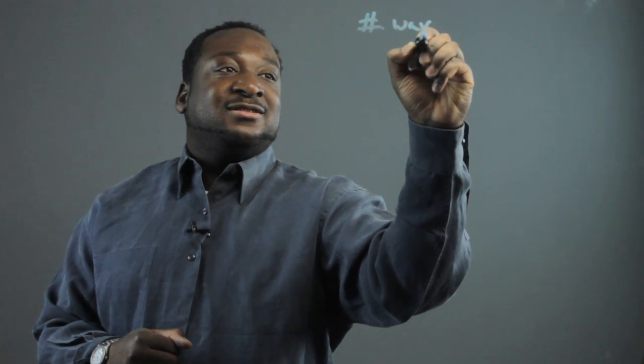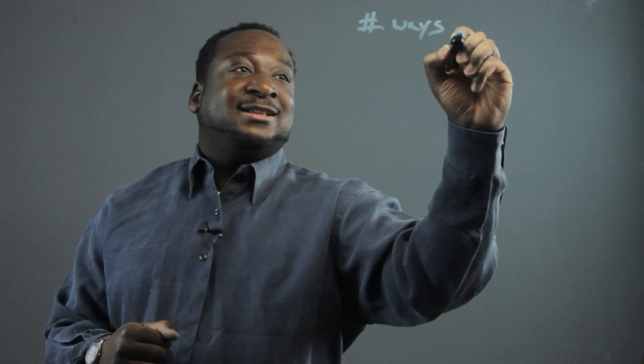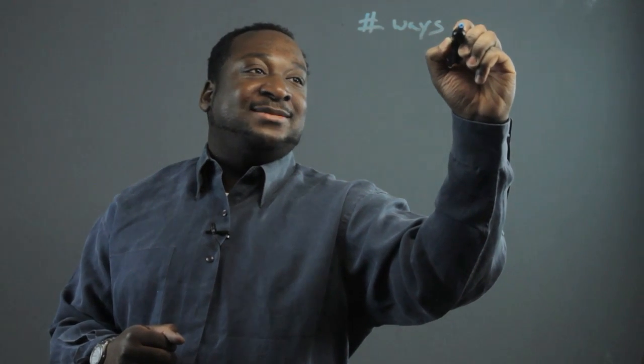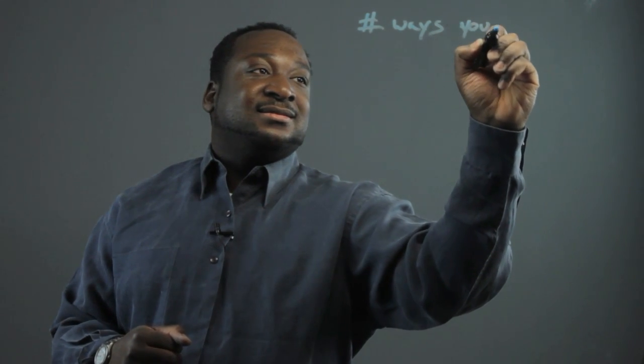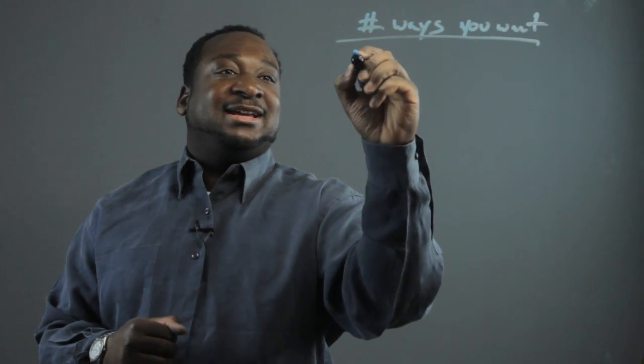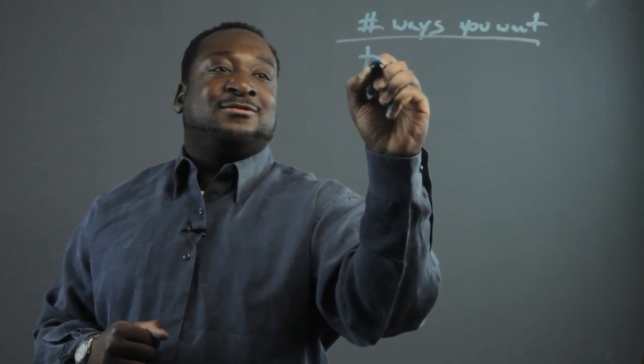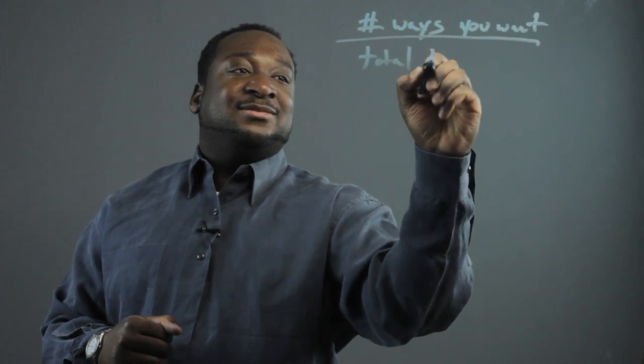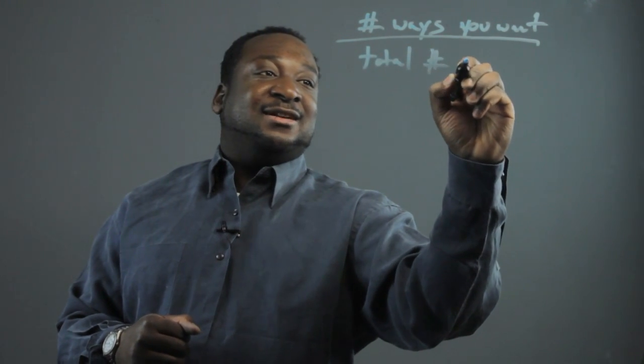Now to find the probability of something happening, it's just the number of ways that you want something to happen divided by the total number of outcomes.